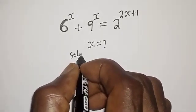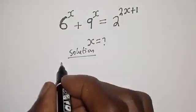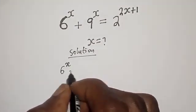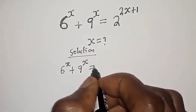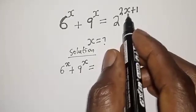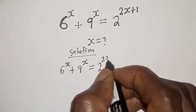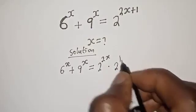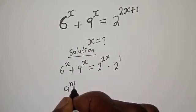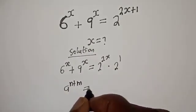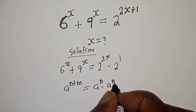Solution. Here, 6 raised to power s plus 9 raised to power s is equal to 2 raised to power 2s plus 1, which can be written as 2 raised to power 2s multiplied by 2 raised to power 1, using the rule that a raised to power n+m equals a raised to power n multiplied by a raised to power m.